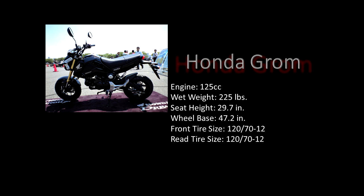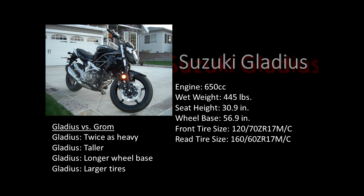The two systems under test will be the two motorcycles that I own. The first bike is the Honda Grom — it's a really small motorcycle, and there aren't actually that many motorcycles on the road as small as a Honda Grom. The second bike is a Suzuki Gladius. It's a medium weight bike, though it's double in weight, taller, with larger tires and wheelbase than the Grom. These differences in dimension and weight might cause a different lean angle.